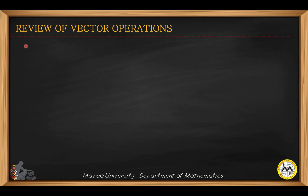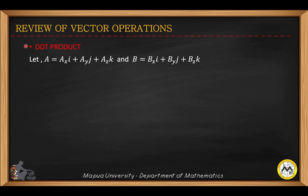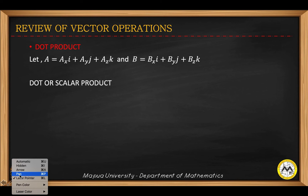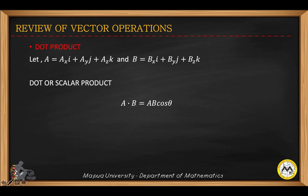Let's first review some basic vector operations. Starting with the dot product — the dot product is also known as the scalar product because performing the operation gives you a scalar or real number. Given vectors A and B, the dot product is obtained by taking the product of their magnitudes multiplied by cosine theta.